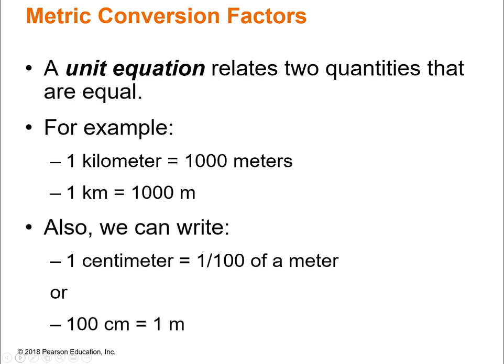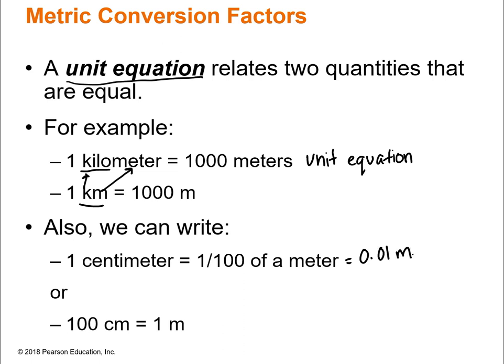We can write what's called a unit equation to relate two quantities that are equal. For example, one kilometer equals 1,000 meters — that's a unit equation. When you write it with abbreviations, kilometer is km (k for kilo, m for meter). You can also say a centimeter is 0.01 meters, or 100 centimeters equals one meter. We're just writing two equal things with different units.